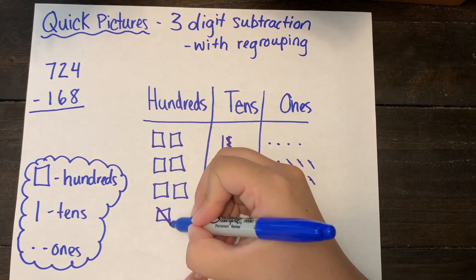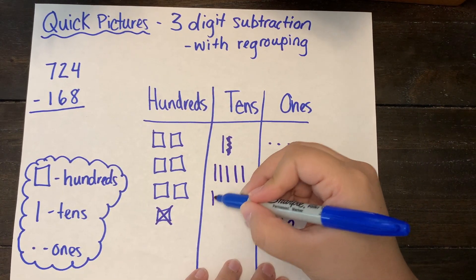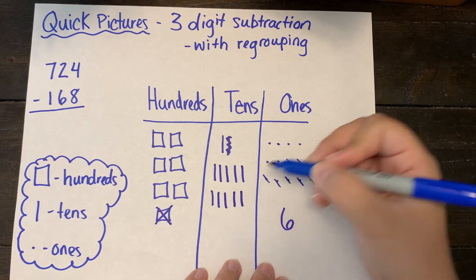I do not have enough tens so I'm going to go to my hundreds and I'm going to regroup one hundred as ten tens. This will give me enough to take six tens away.